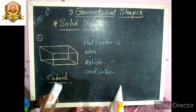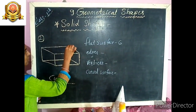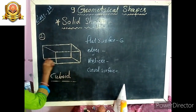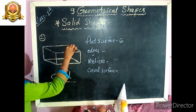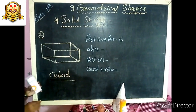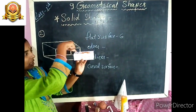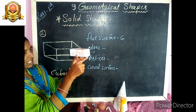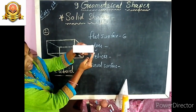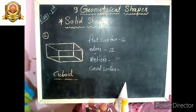And edges — how many edges are there? 1, 2, 3, 4, 5, 6, 7, 8, 9, 10, 11, 12 — there are 12 edges. Cuboid has 12 edges. And vertices — how many vertices are there? Vertices means corners: 1, 2, 3, 4, 5, 6, 7, and 8 vertices. Cuboid has 8 vertices.